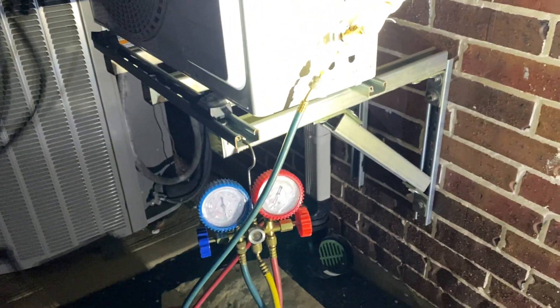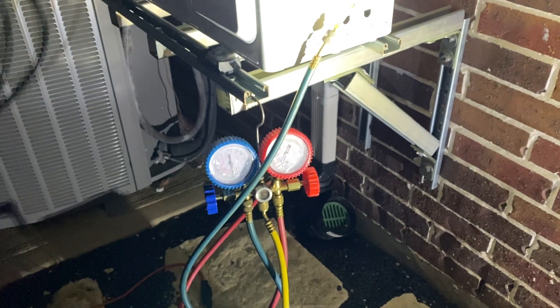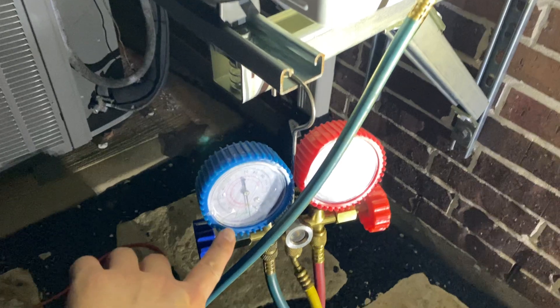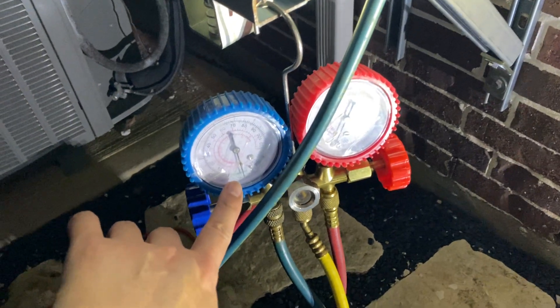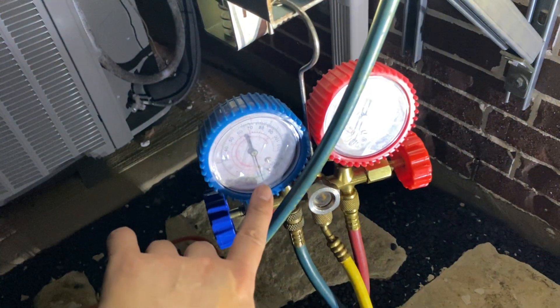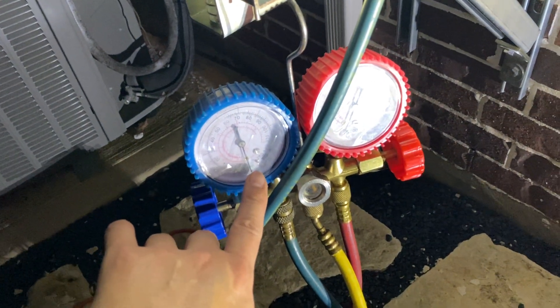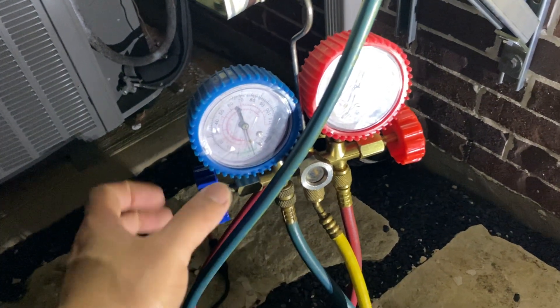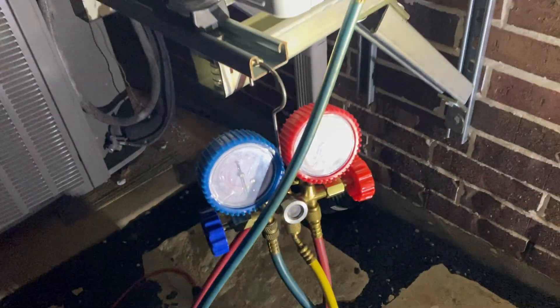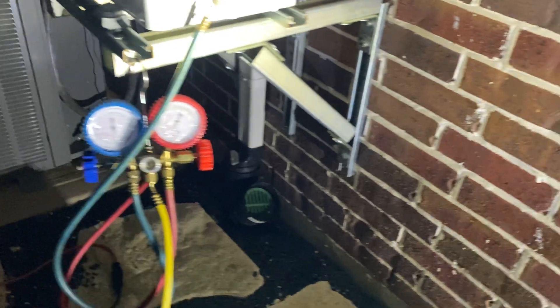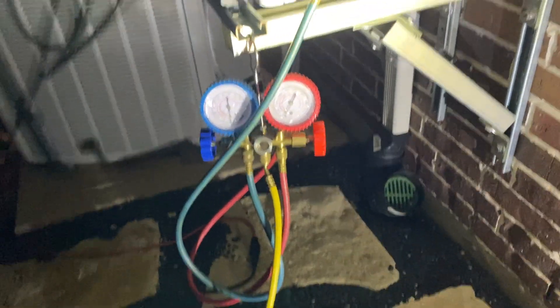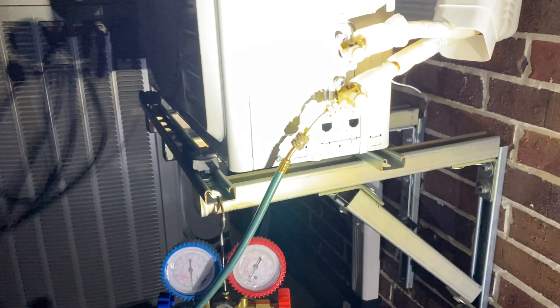After you've done that for 15 minutes, you want to let this sit for another 15 minutes because you don't want this to lose any vacuum. If it loses vacuum, that means you have a leak somewhere. This has actually been sitting around for about 30 minutes, so I know it's not leaking. Right now, the next step is to open the valves and let the refrigerant in.